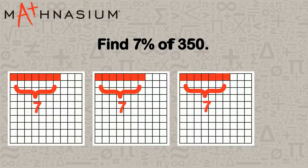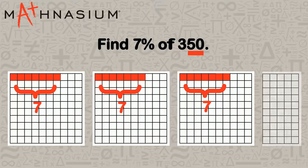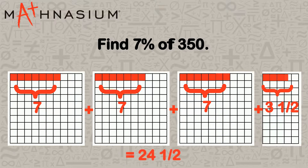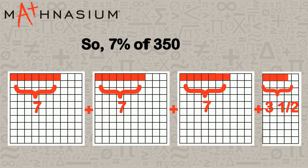What's left over is 50, or half of 100, so we'll take half of 7, which is 3.5. 7 plus 7 plus 7 plus 3.5 equals 24.5. So 7% of 350 equals 24.5.